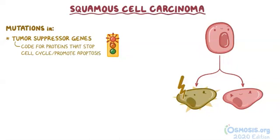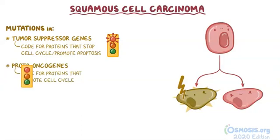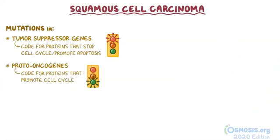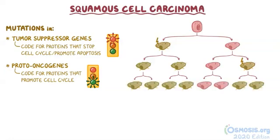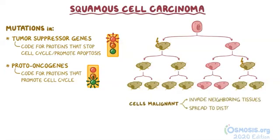Or mutations can occur in proto-oncogenes, which normally code for proteins that promote the cell cycle — they're the cell cycle's accelerator pedal. When this happens, squamous cells start dividing uncontrollably, and more mutations accumulate with each division. Eventually, these mutations might make the cells malignant, meaning they gain the ability to invade neighboring tissues and spread to distant sites.